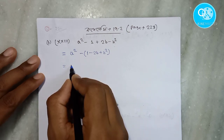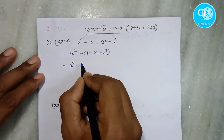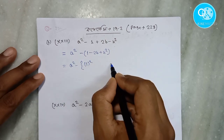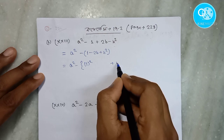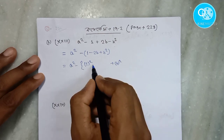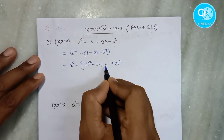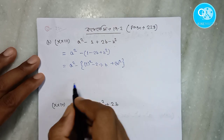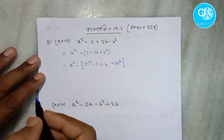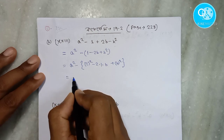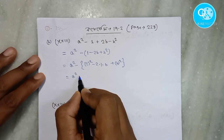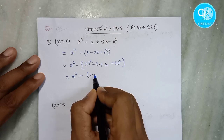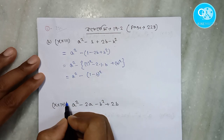You can see here. Since we have 1 plus 1·a square, we have b plus b square plus b square. So, minus 2 into 1 into b. But we have the 2ab term. Now, we have a square minus 1 minus b, whole square.